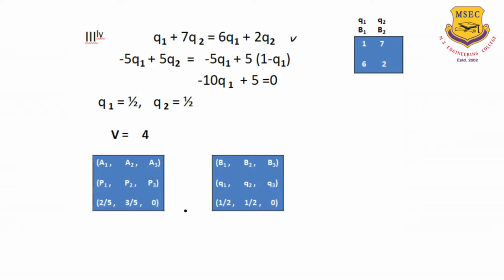So we write down the solution in this format: A is playing A1, A2, A3 with probabilities P1, P2, P3, where P1 is 2/5, P2 is 3/5, and P3 is 0. Similarly, Q1 is 1/2, Q2 is 1/2, Q3 is 0, and the value of the game is 4. This is how we determine the solution when we do not have the saddle point.